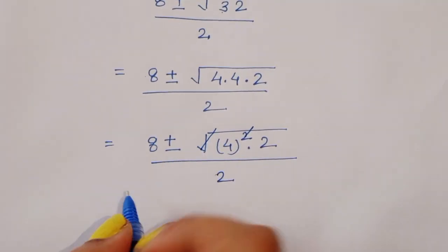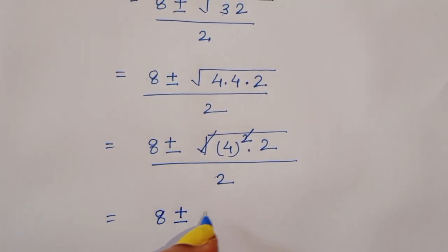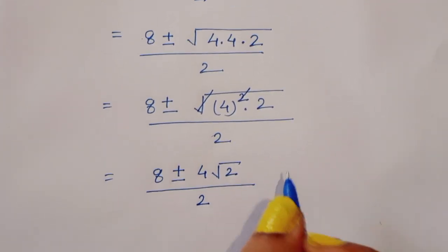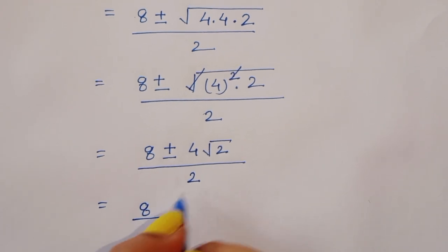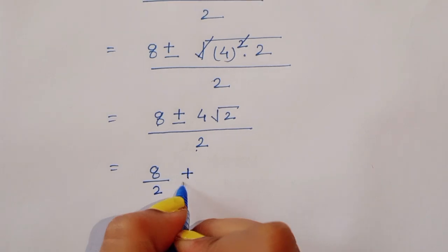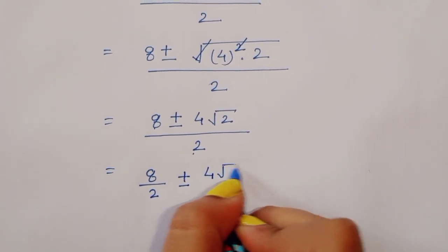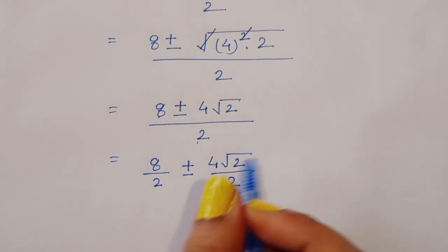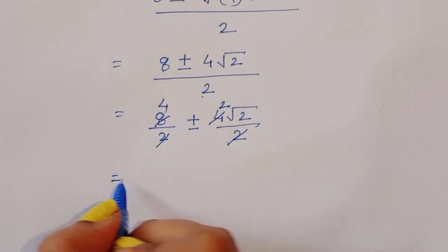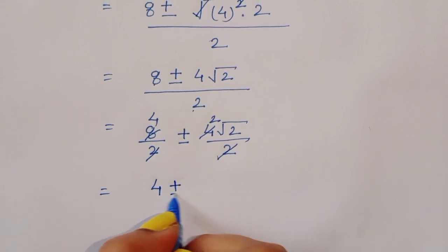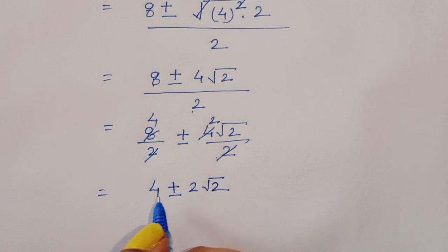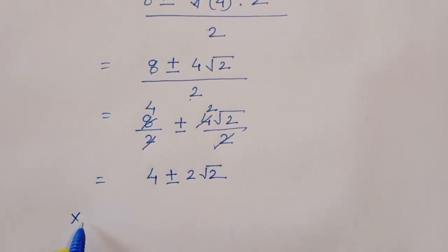So the square root of 32 is 4 root 2. We get 8 plus or minus 4 root 2, all divided by 2. Separating the terms: 8 divided by 2 plus or minus 4 root 2 divided by 2, which gives us 4 plus or minus 2 root 2.